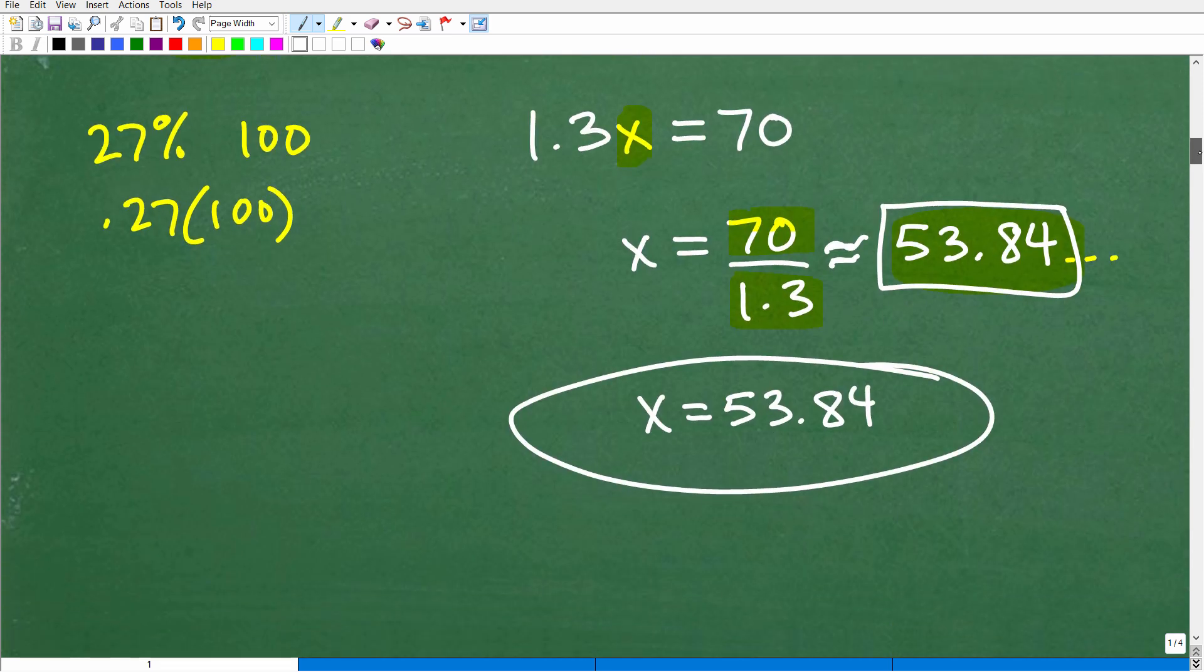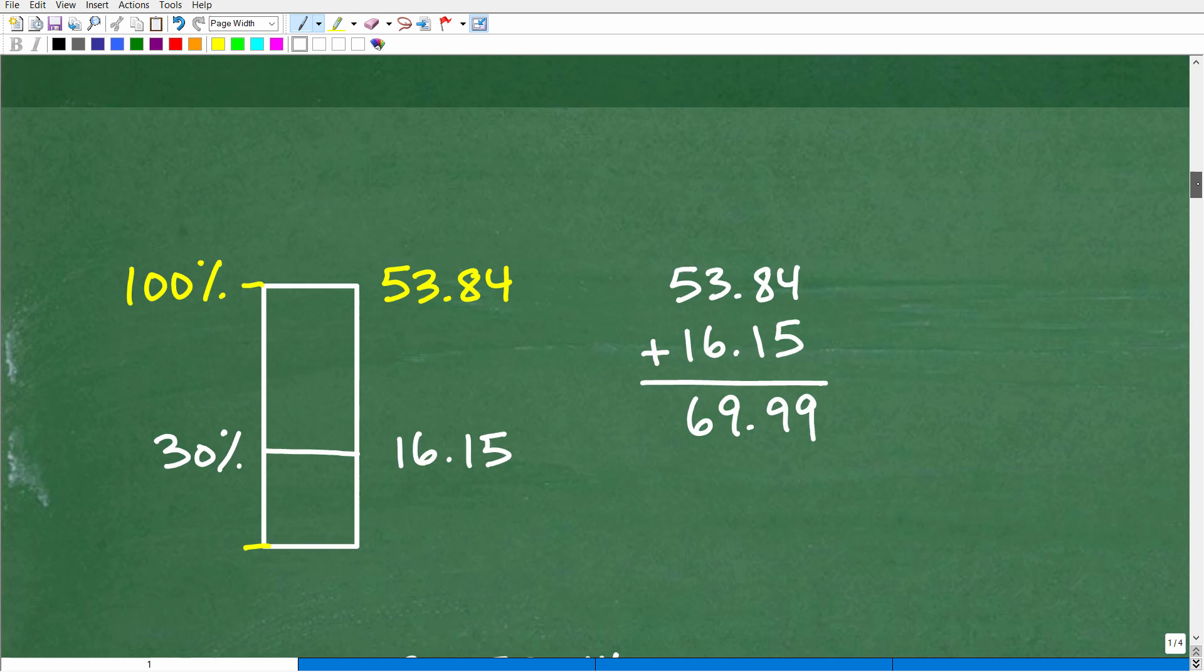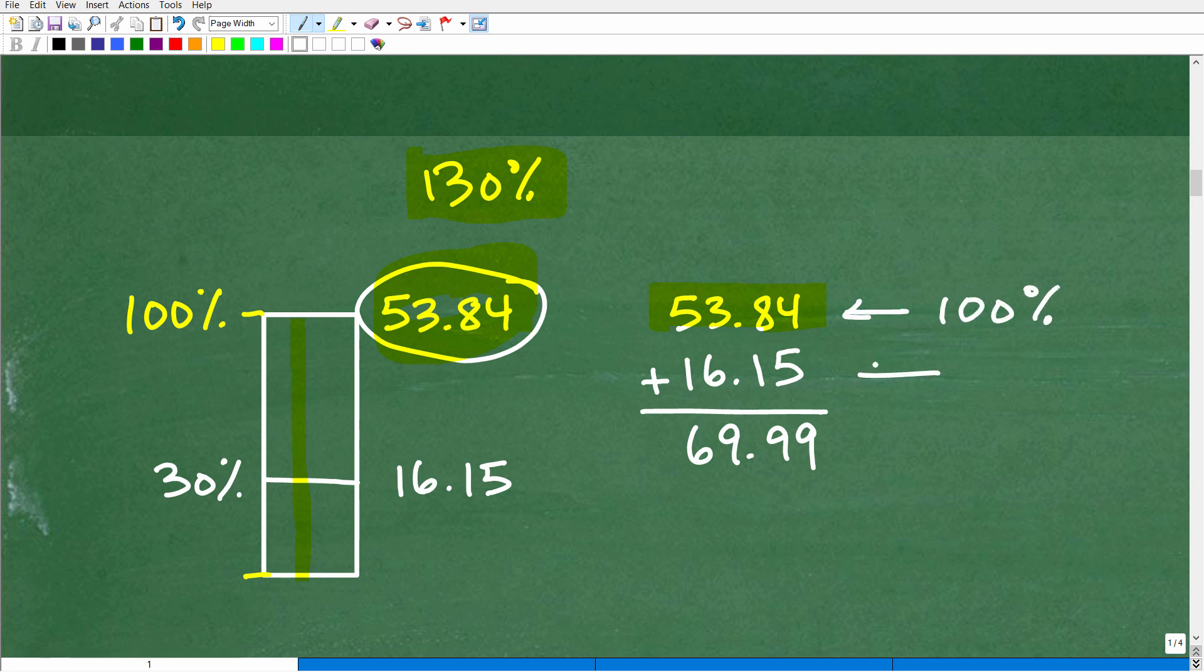53.84, that's the answer. So 130%, right? So we're saying 130% of this number. And this number that we just calculated was 53.84. So to calculate or to get 130%, we're going to go from zero all the way up to 100% of that number. Of course, that number will be 53.84. So that's 100% right there. Now, we need 30% more, right? To get to 130%.